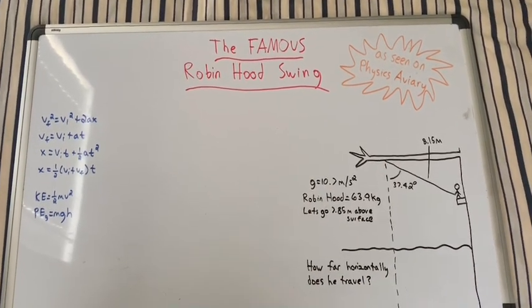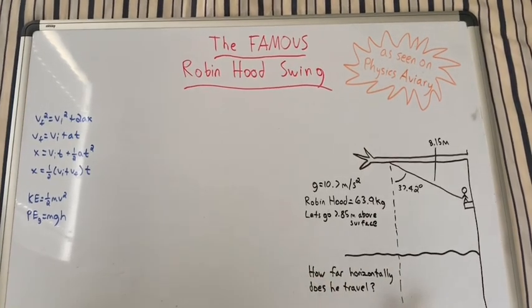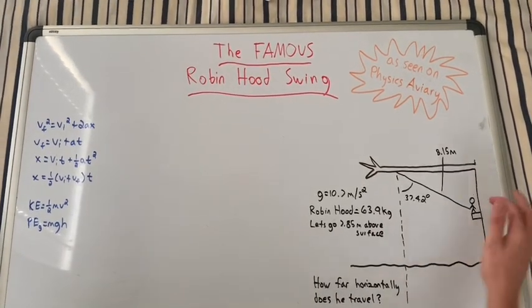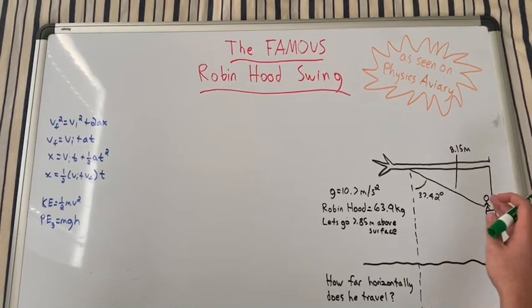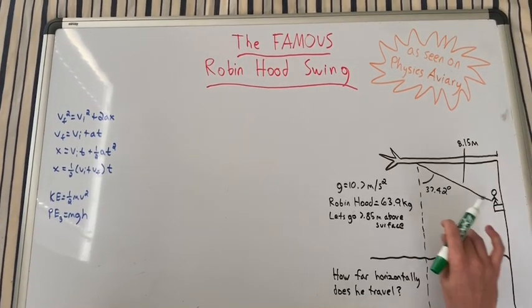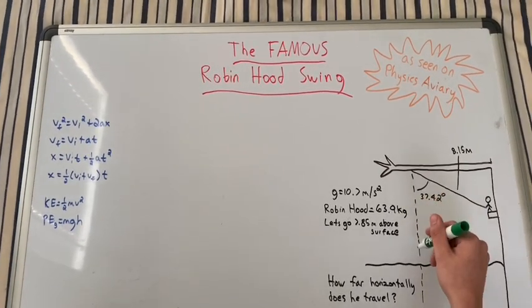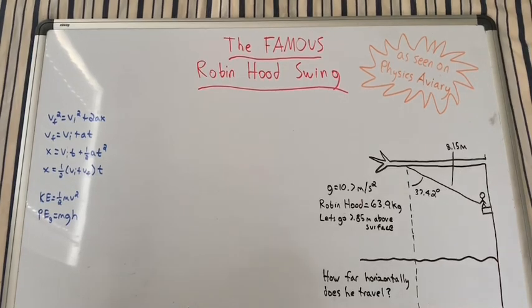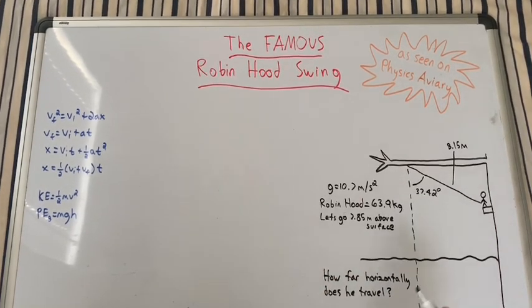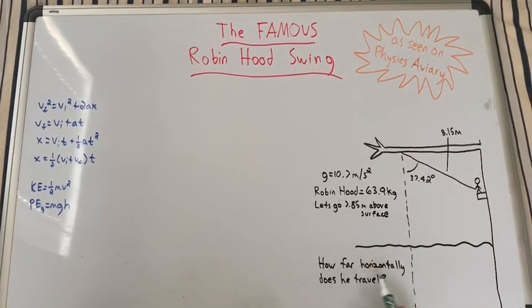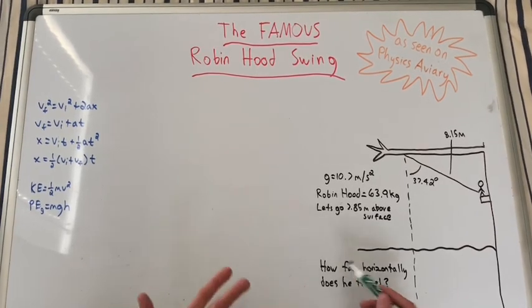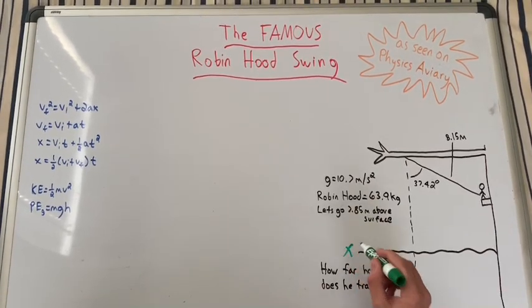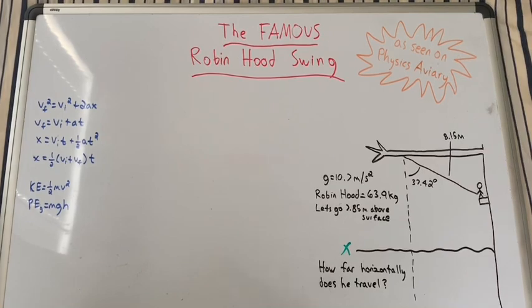Okay, so here's the basics of the problem. We have Robin Hood over here and he's going to swing down on his little pendulum. Then when he reaches his dotted line, he's going to let go and fly off into the water. What we want to find is how far horizontally does he travel—basically at what point, like x over here, will he hit the water.